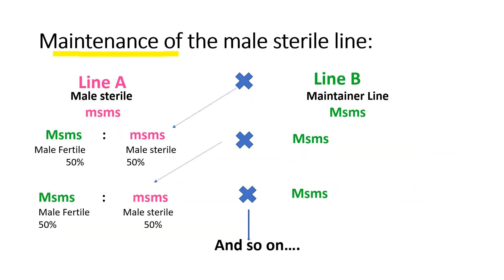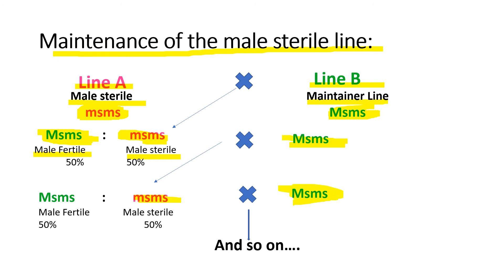Maintenance of the male sterile line: the genetic male sterile line, which is A-line and is homozygous recessive, is maintained by backcrossing with the heterozygous B-line (maintainer line), but the progeny produced are 50% fertile and 50% sterile. When we cross line A with line B — line A is always recessive and line B is heterozygous dominant — we get male fertile and male sterile lines in a 1:1 ratio. When the male sterile line is further crossed with the B-line, we again get 50% fertile and 50% sterile.